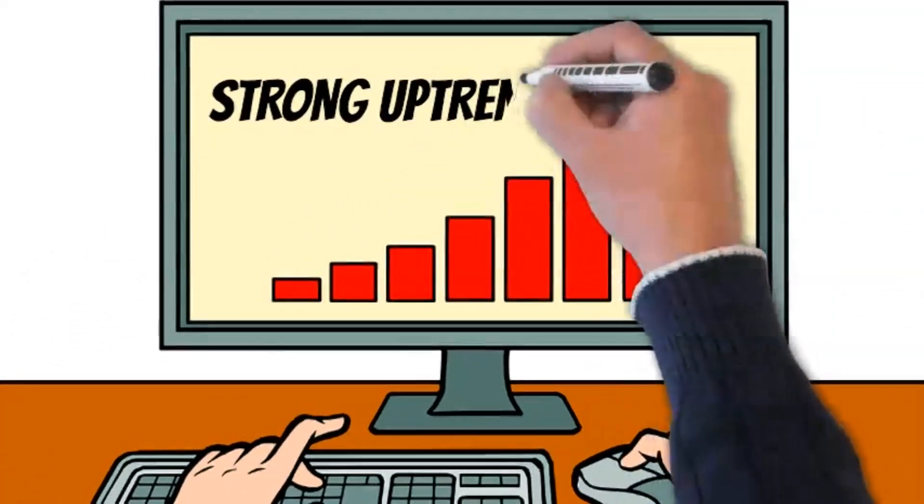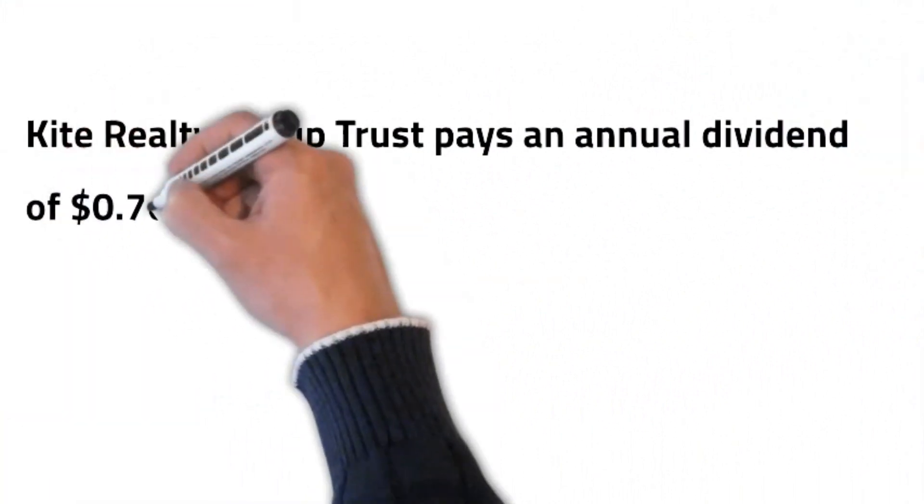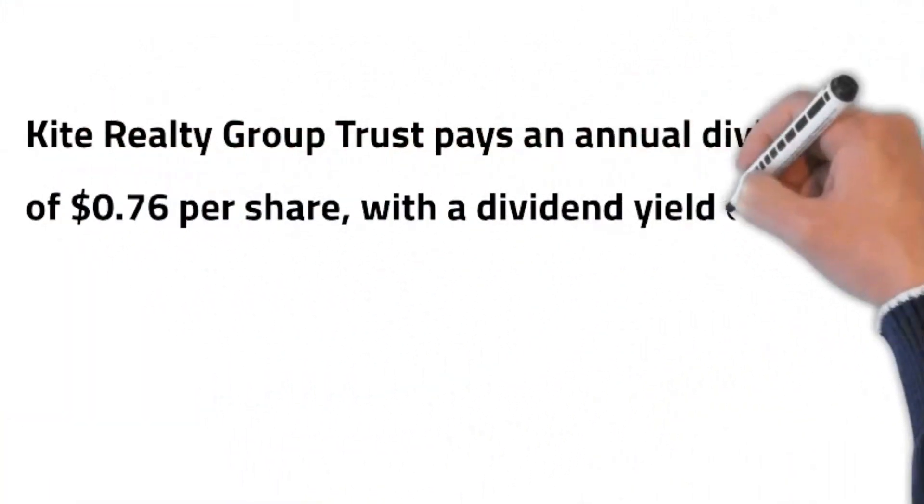Kite Realty Group Trust pays an annual dividend of 76 cents per share with a dividend yield of 3.41% and it has a current payout ratio of 566.67%, which is not sustainable.